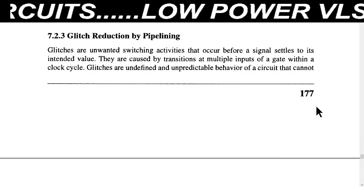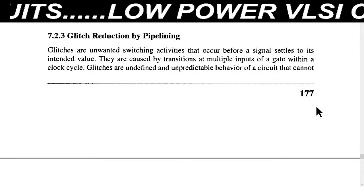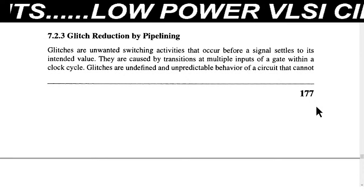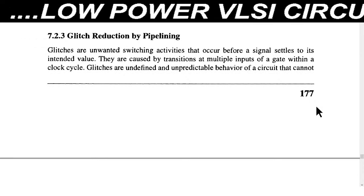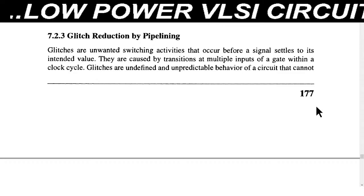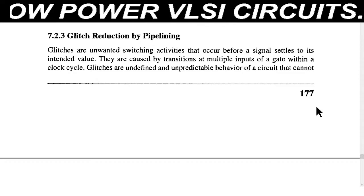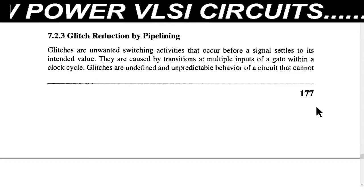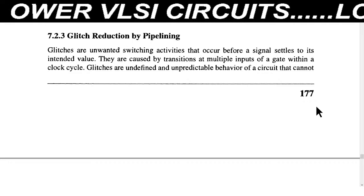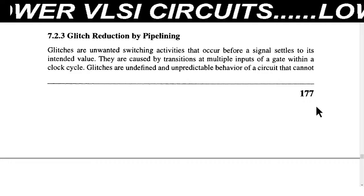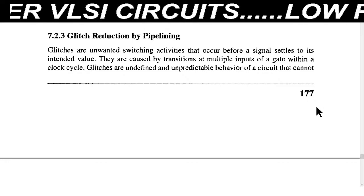The third way to reduce switching and increase performance is glitch reduction. We can reduce glitches by using pipelining. First of all, what is the meaning of glitch? A glitch is nothing but an unwanted fluctuation or unwanted spike that we get on the output side of the circuit due to unwanted switching activity.